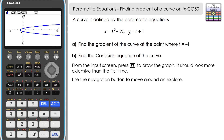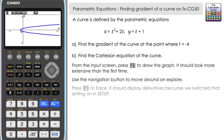We're interested in finding the gradient when t equals minus 4. Press F1 to establish a trace and you can see several bits of information displayed: dx by dt — the derivative of x — and dy by dt — the derivative of y — currently at t equals negative 10, which was the minimum we set.